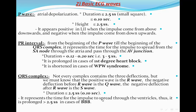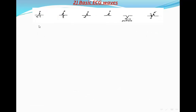The QRS complex represents the time for the impulse to spread through the ventricles; it is prolonged beyond 2.5 small squares in bundle branch block. To name the different deflections: the positive deflection is the R wave, the negative deflection before R is the Q wave (alphabetically QRS), and the negative deflection after R is the S wave. Where there are only two deflections — one positive (R) and one negative after it — that is an RS pattern. Where the negative deflection comes before the R, that is a QR pattern.